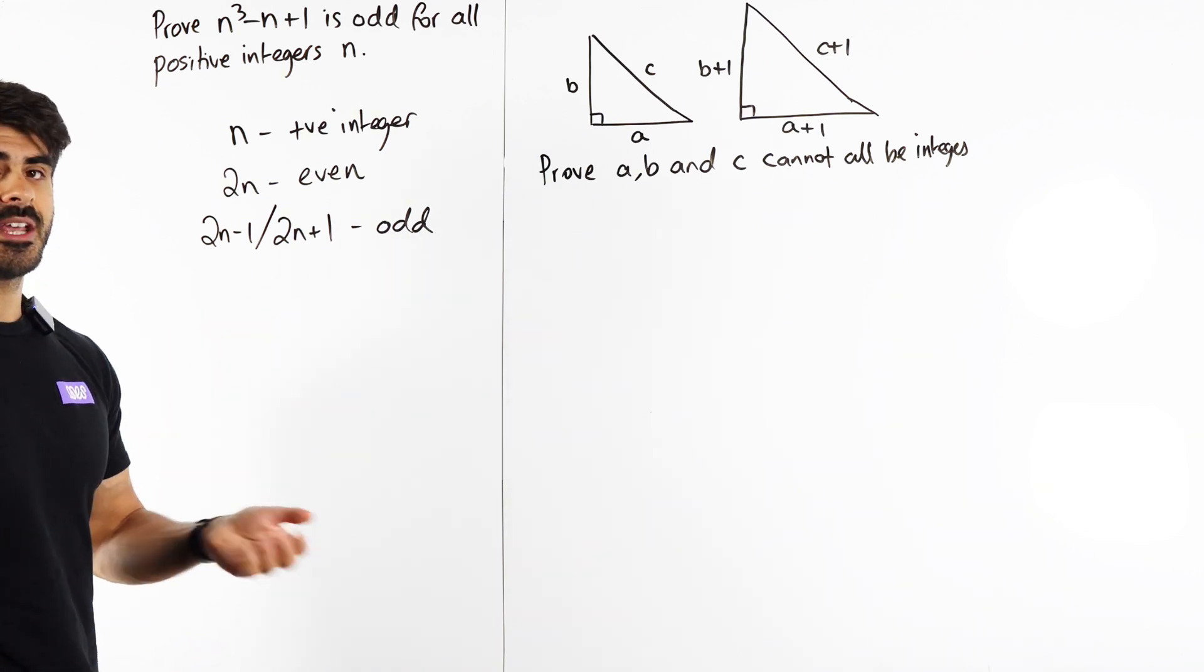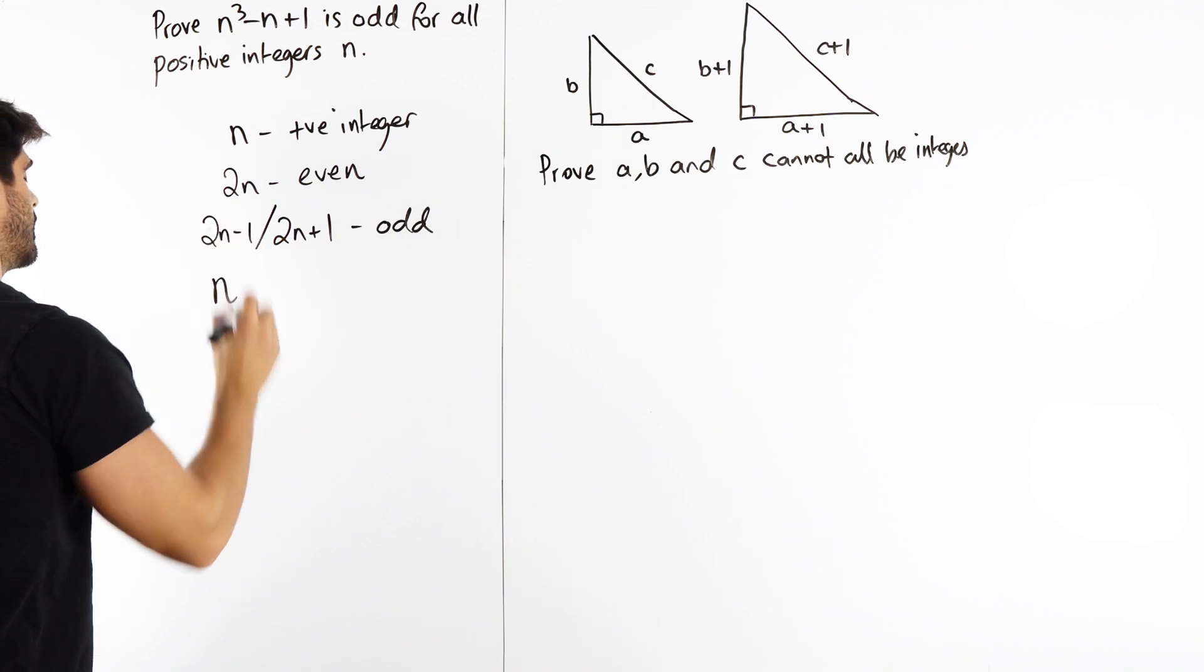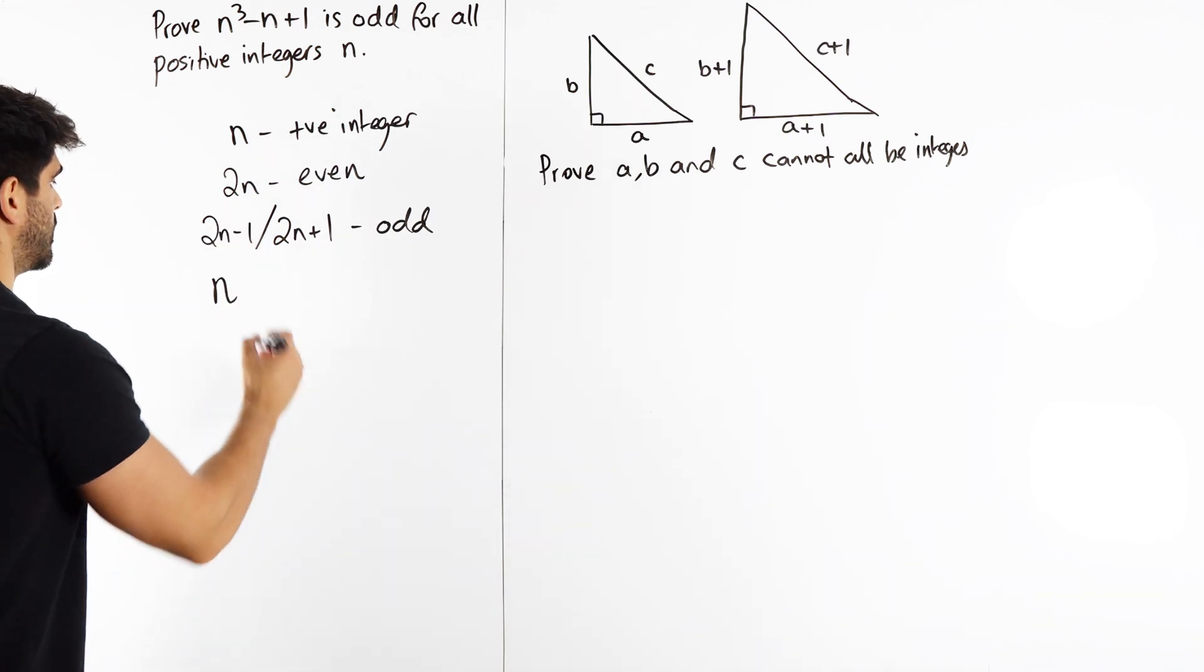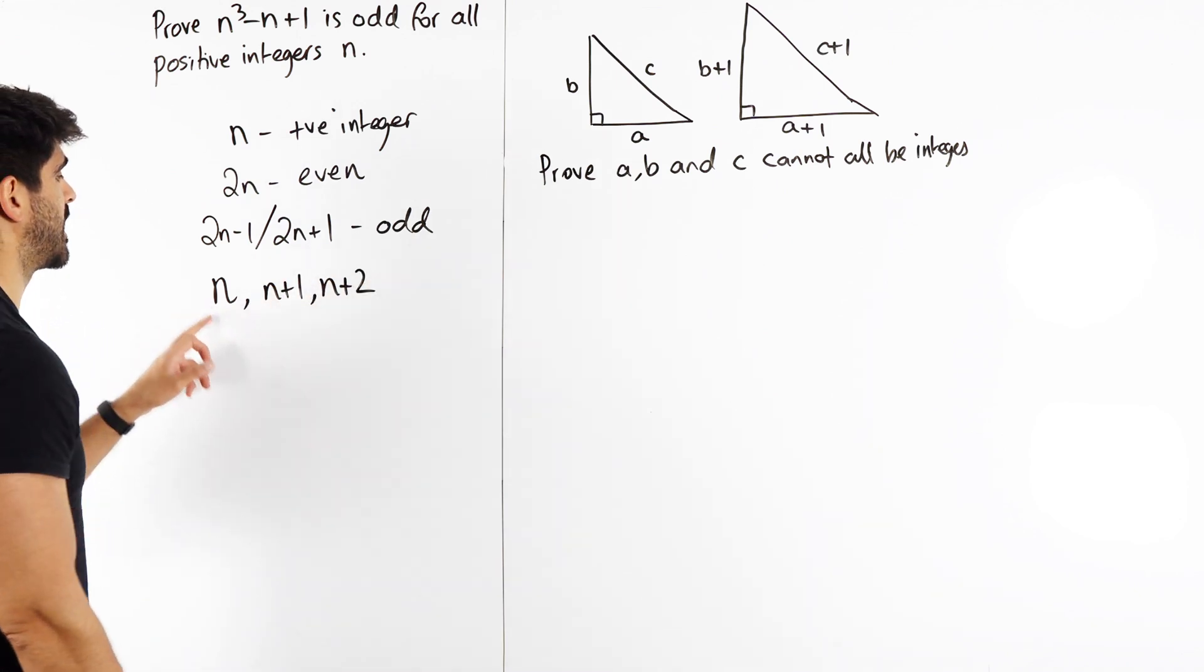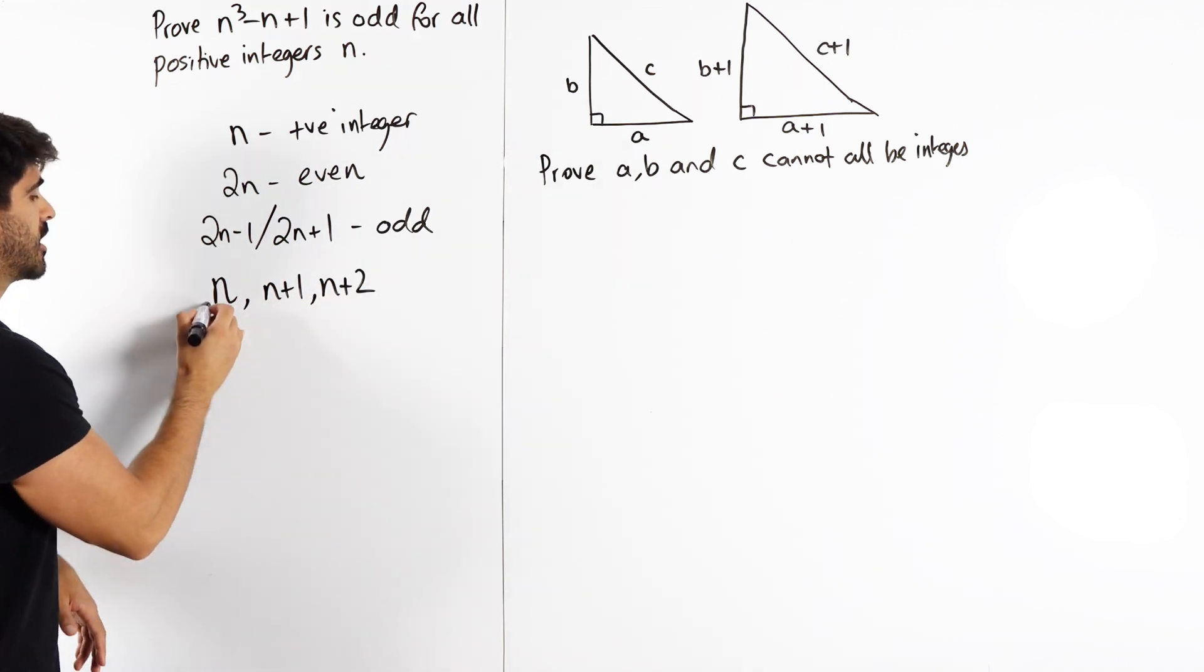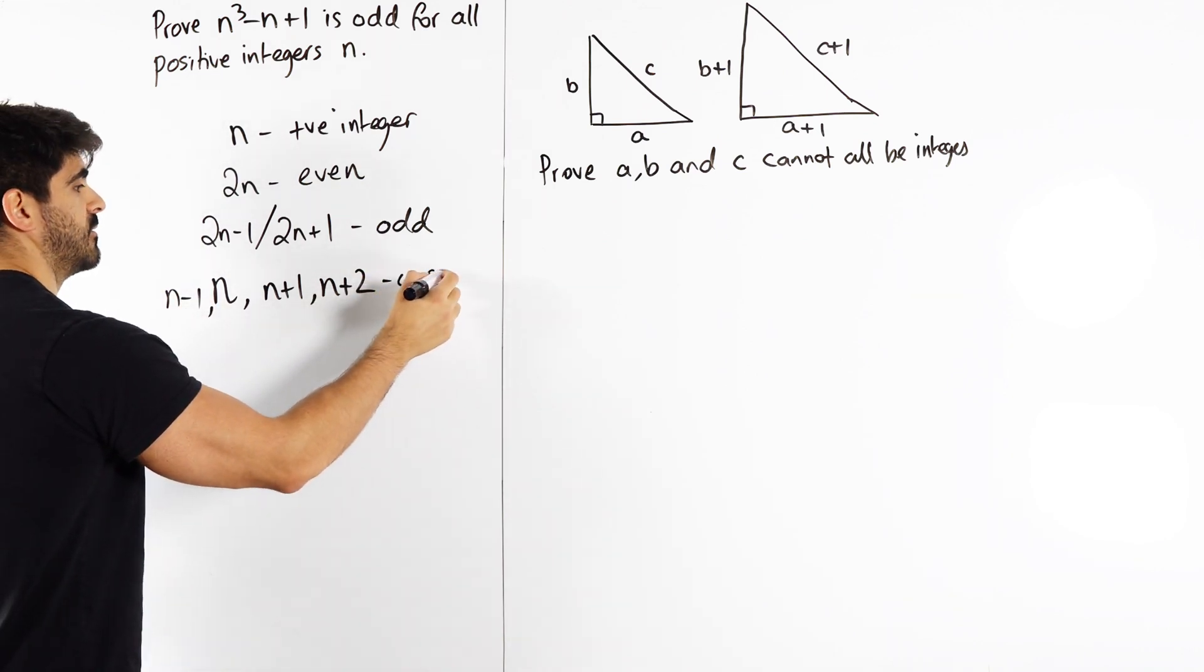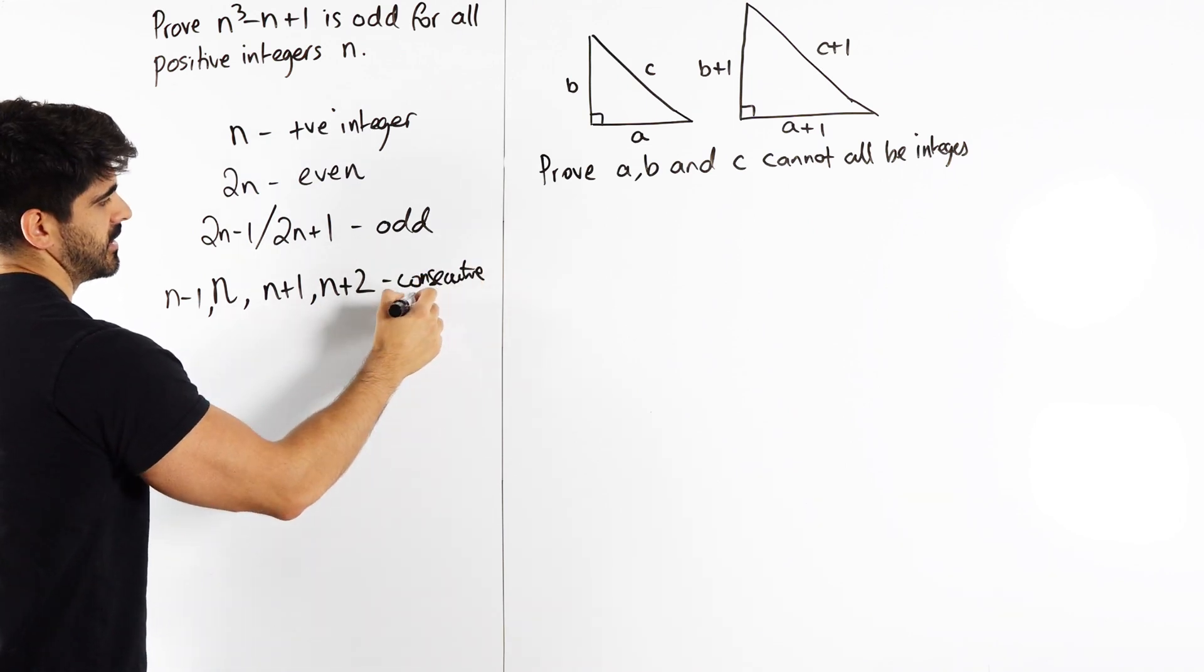The last thing is consecutive numbers. So if we have an integer n, consecutive numbers would be n, n + 1, n + 2. You're just adding 1. But also you could go the other way: n - 1, n - 2, etc. They're consecutive integers.